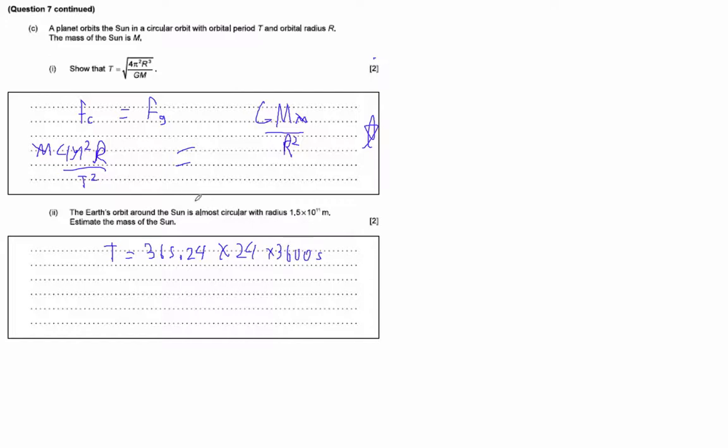So then you got to figure out the period of the Earth's orbit. And then just use this equation. You know the period, we know the radius they're telling us, we know what G is, and you're just solving for that M.